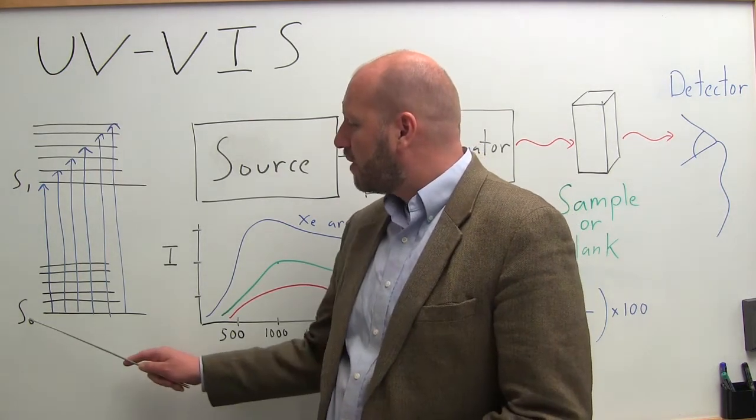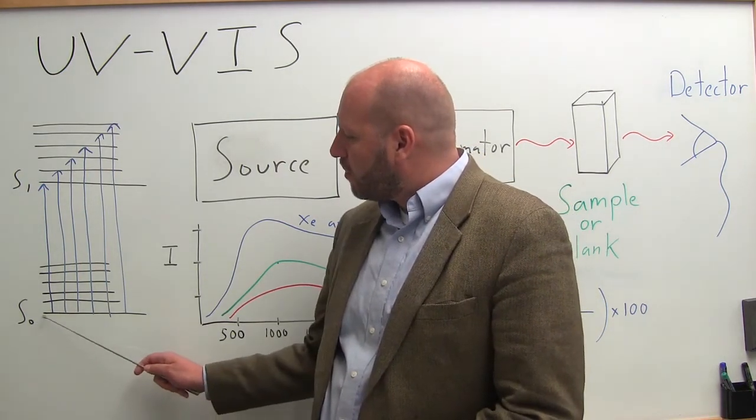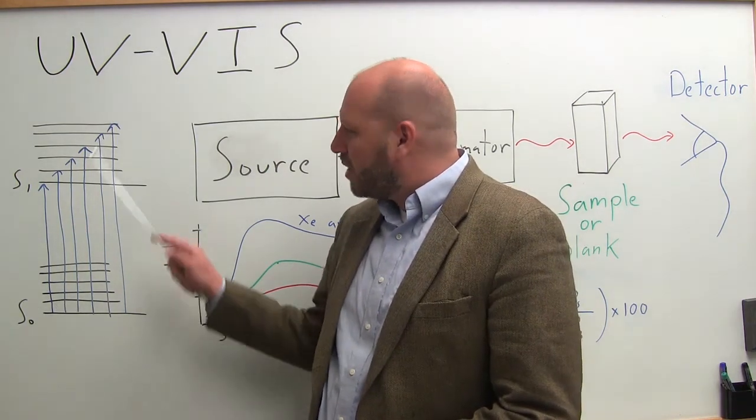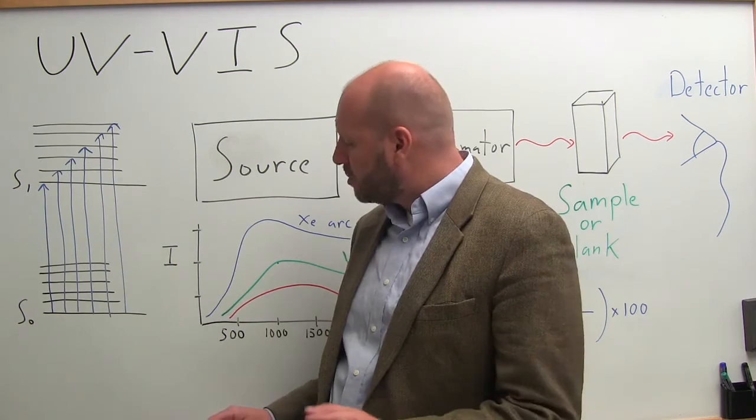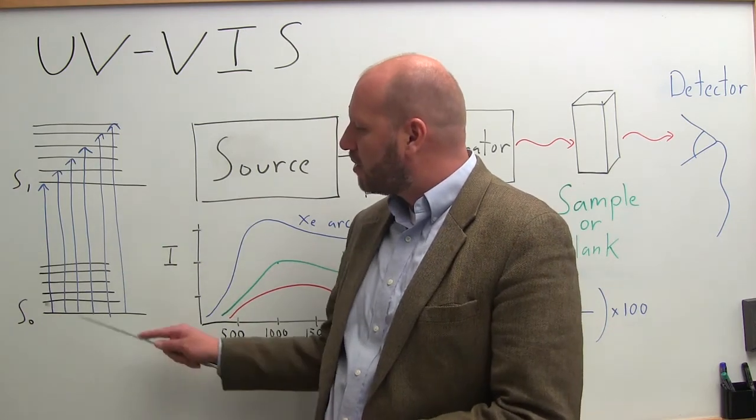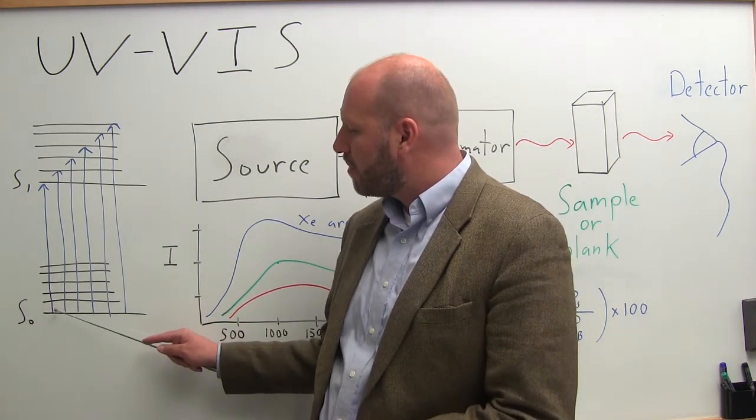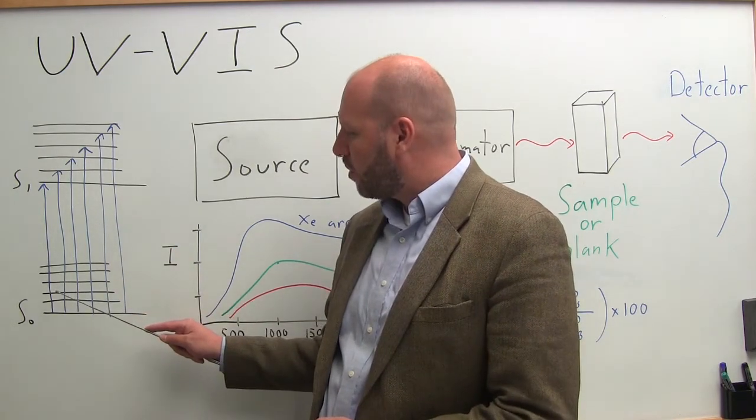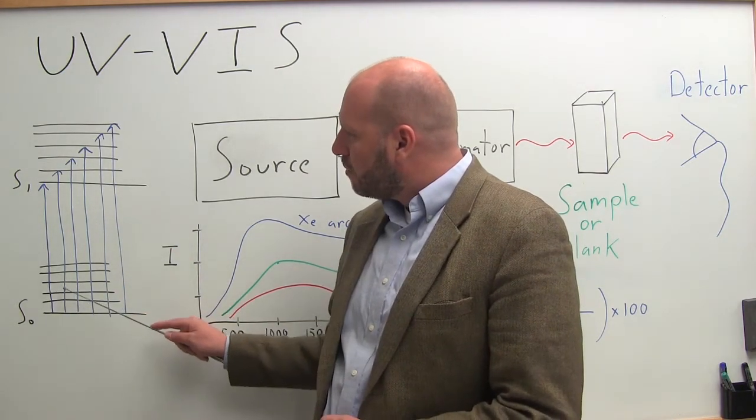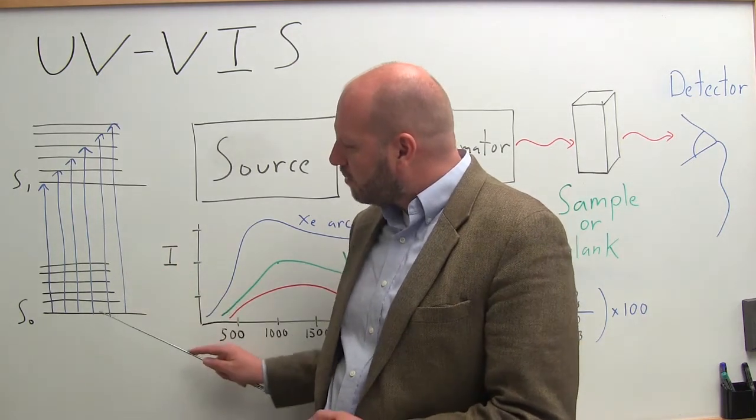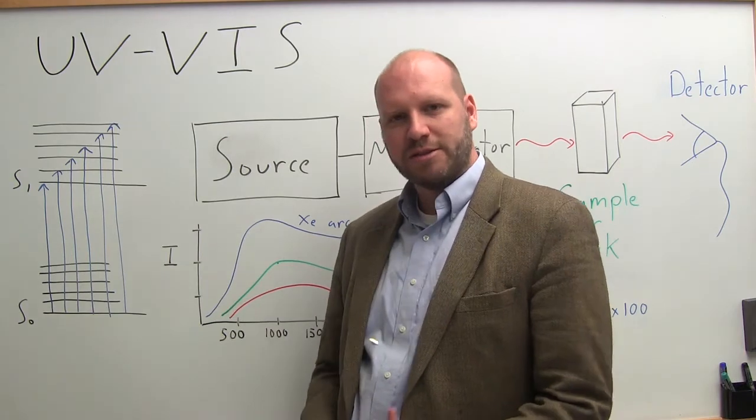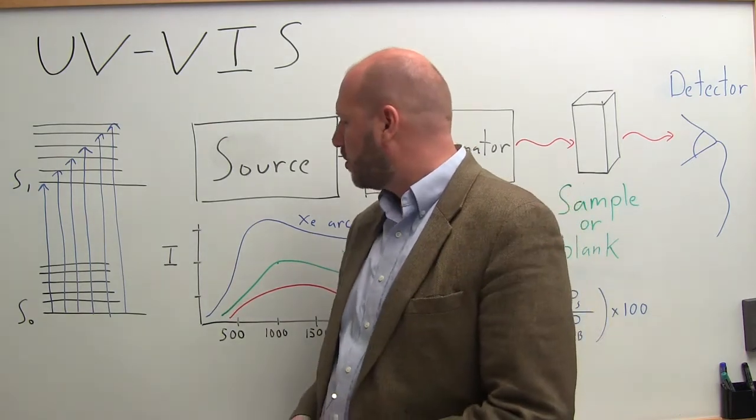Here's a typical energy level diagram for a molecule. Here I have the ground and excited electronic state. On top of that, I have vibrational energy levels. What I do is put a photon into this molecule, and it's going to promote an electron from the ground to the excited state, and result in absorption of that photon. You can see I can start in the ground electronic state and then go to any of these vibrational energy levels on top. That causes UV-Vis to have a somewhat broad absorption profile.